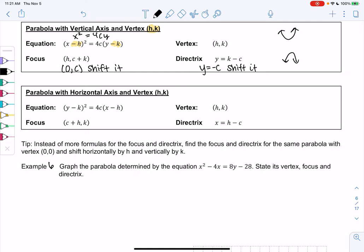Same thing for horizontal. Rather than y² equals 4cx, we just shift it. So (y - k)² equals 4c(x - h). Vertex is shifting to (h,k). And then same with directrix and focus.